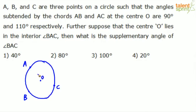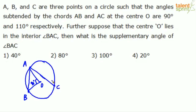AB and AC are the two chords. AB is one chord and AC is the other chord. The angle subtended by chord AB at center O is 90 degrees, and the angle subtended by chord AC at center O is 110 degrees.